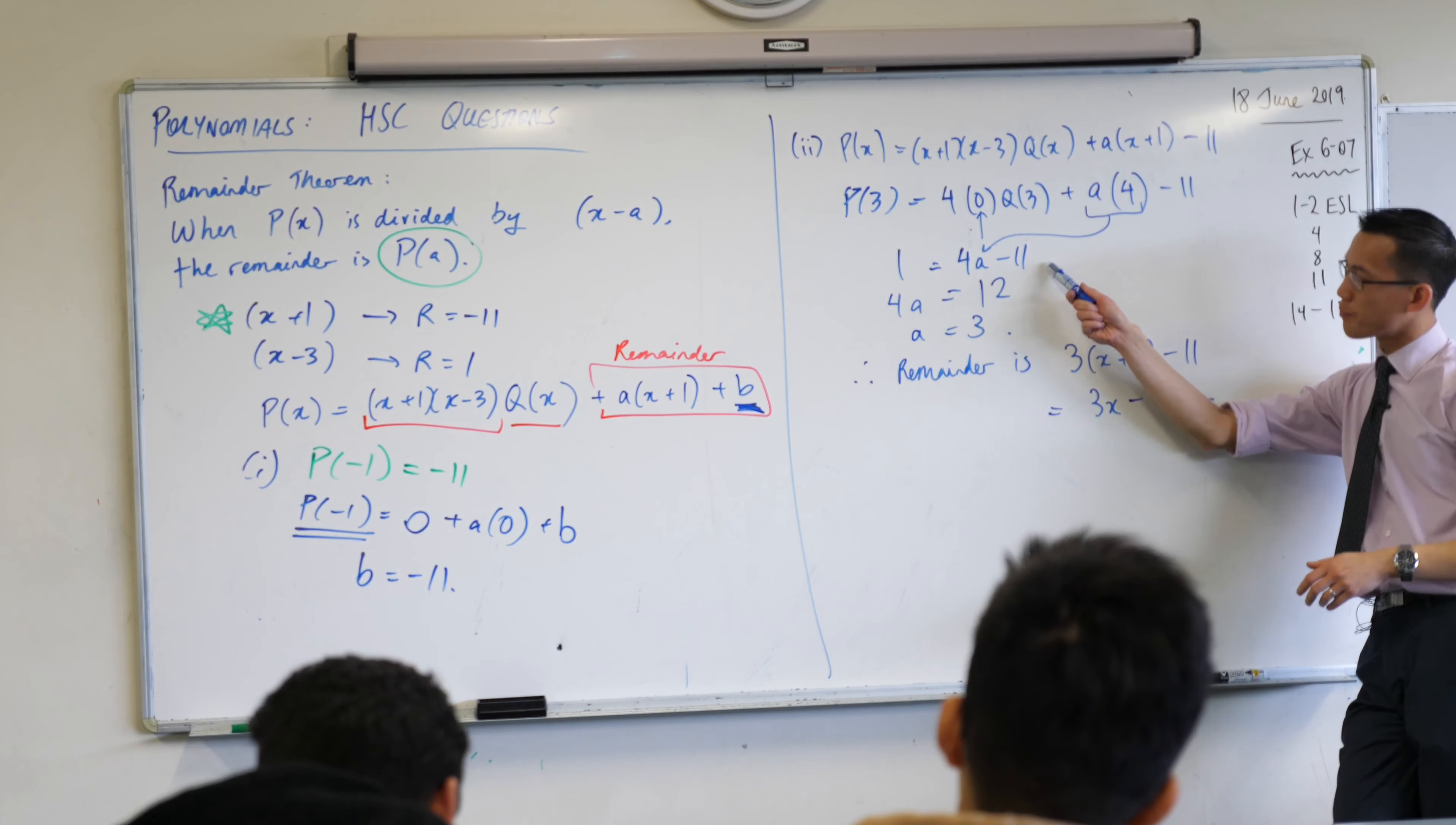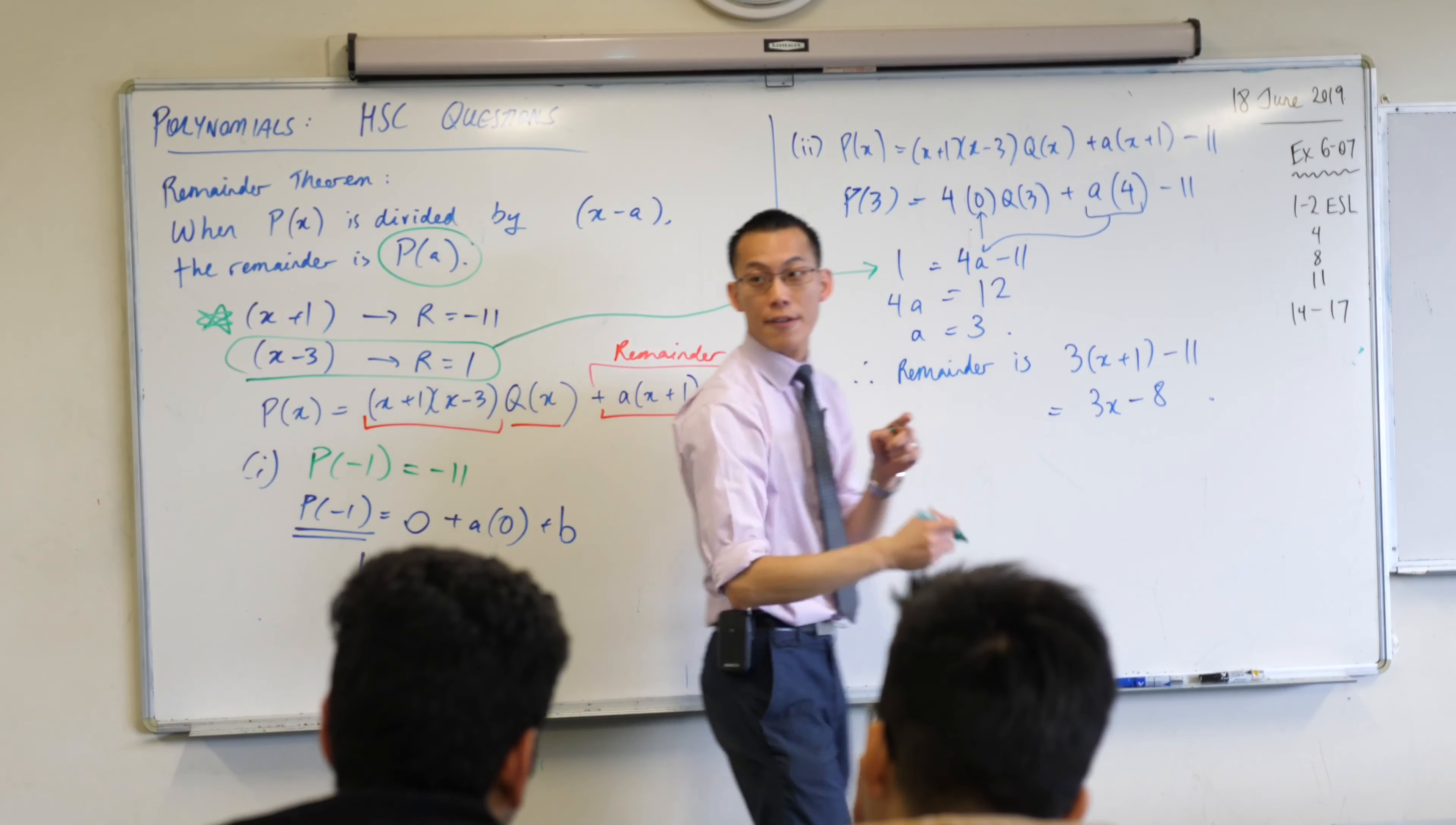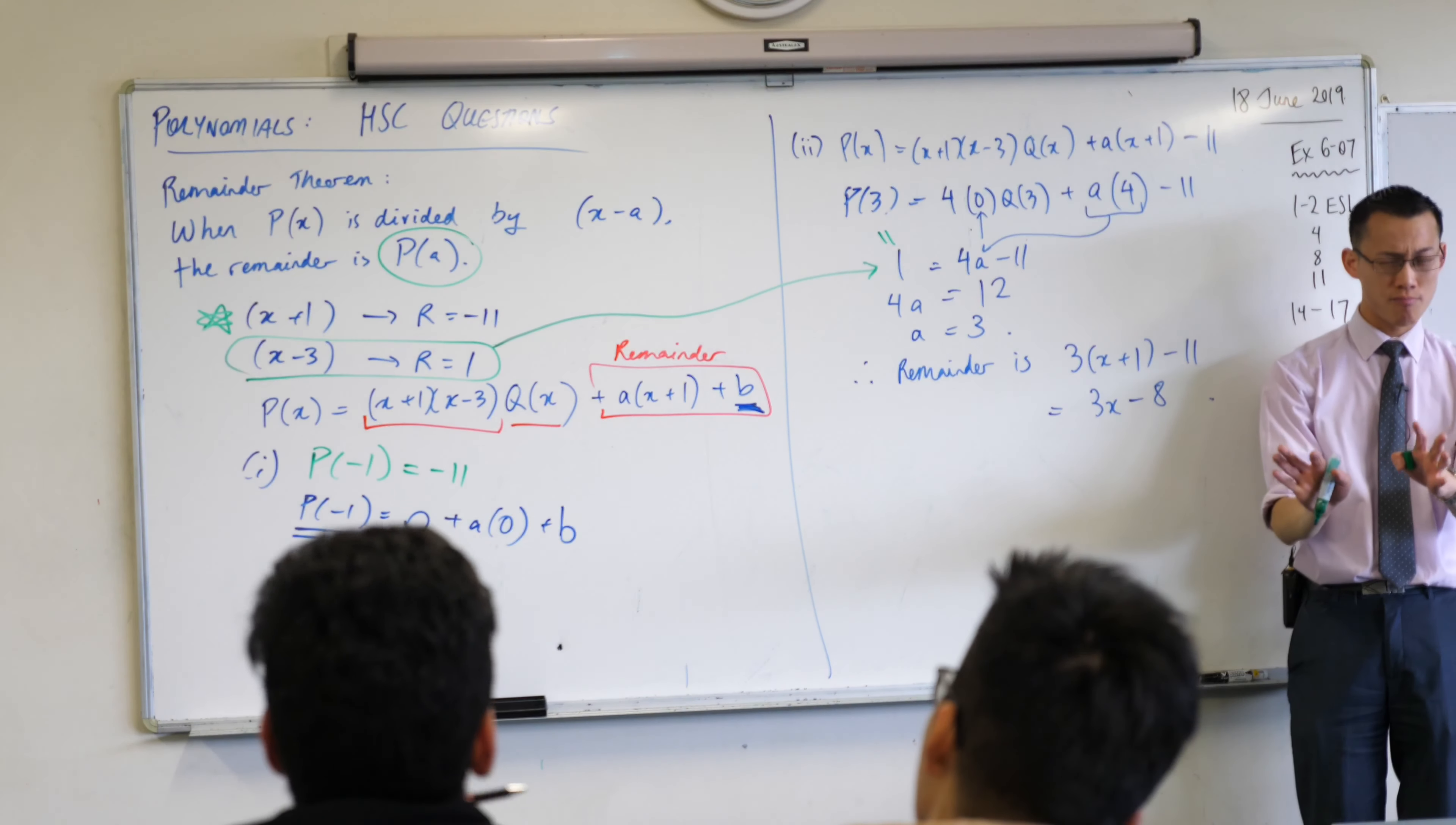Just make sure - line 1 equals 4a minus 11 - the left side of 1 comes from here. That's exactly right. From this fact here, there's an invisible line going to here. I've used the remainder theorem: if you divide through by (x-3), this is the remainder. Therefore P(3) equals that, and then I've just done algebra on the right-hand side.